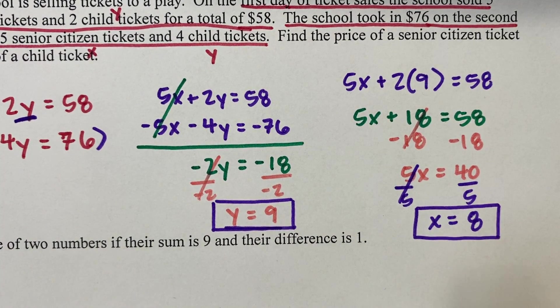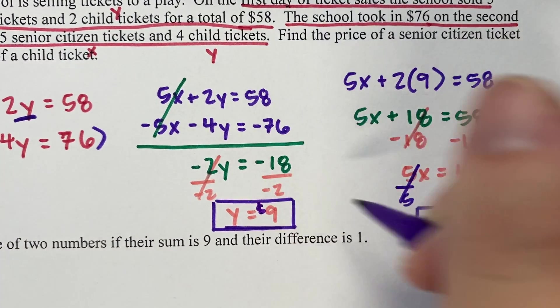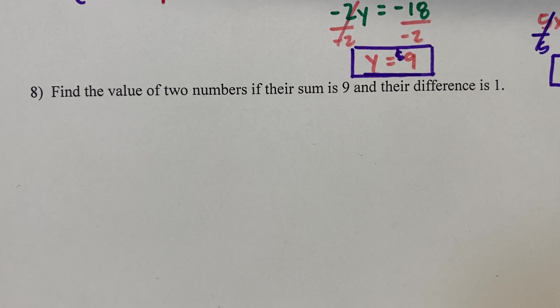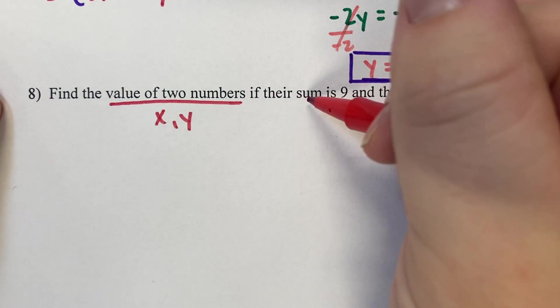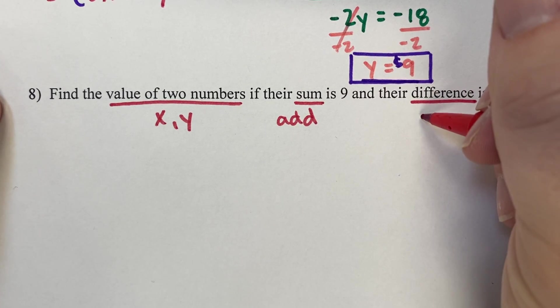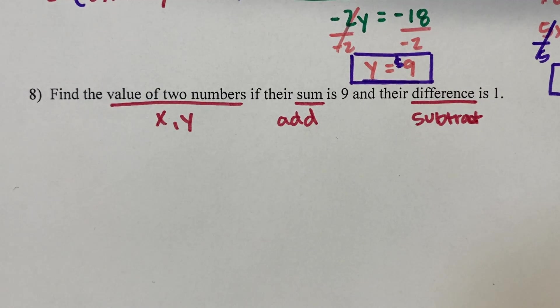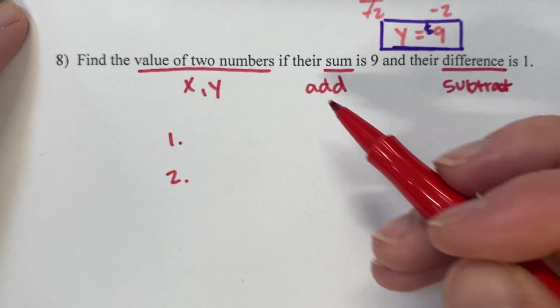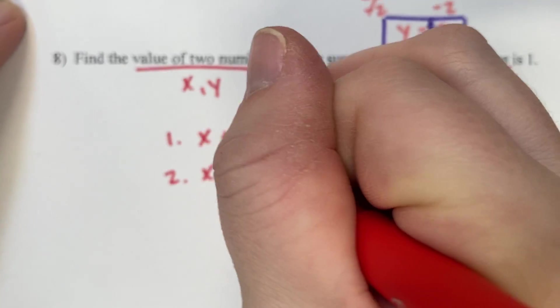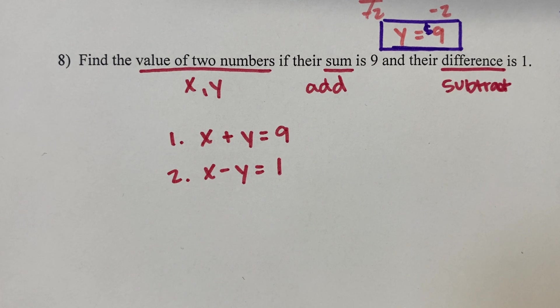So our two solutions: they were charging $9 for a child ticket and $8 for a senior citizen ticket. You could write this as a coordinate point, but because it's in context, we say $9 and $8. For the last example, we're given a scenario: find the value of two numbers. Their sum is 9 and their difference is 1. So we set up two equations: x plus y equals 9 and x minus y equals 1.